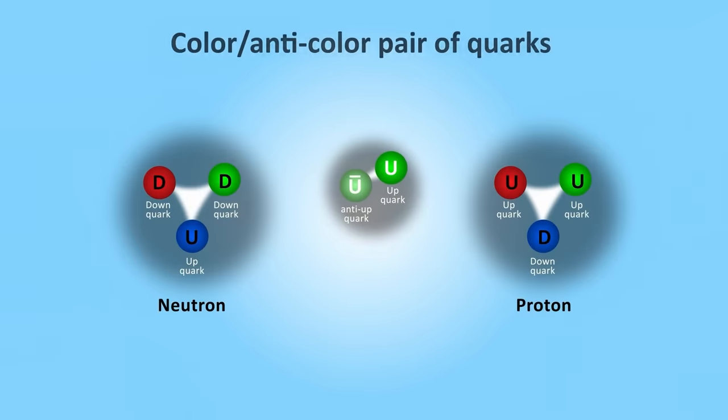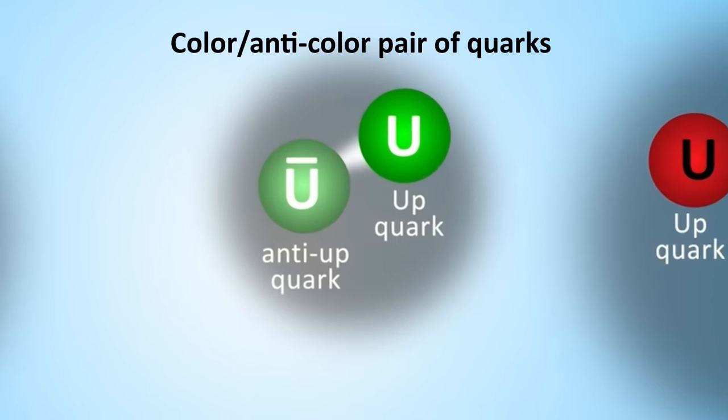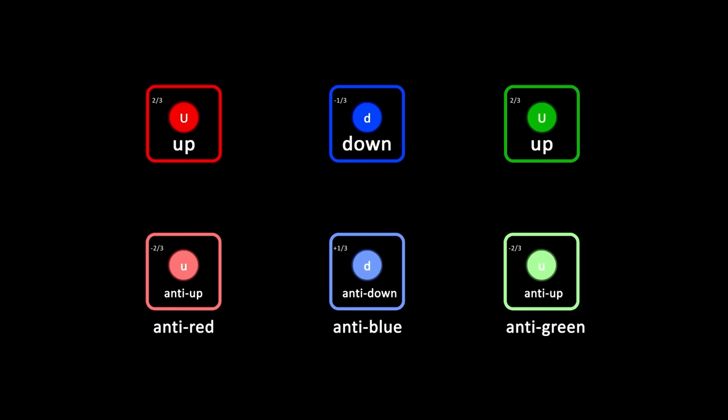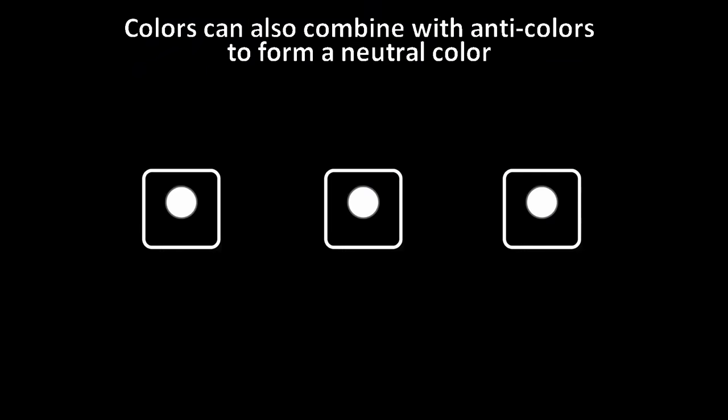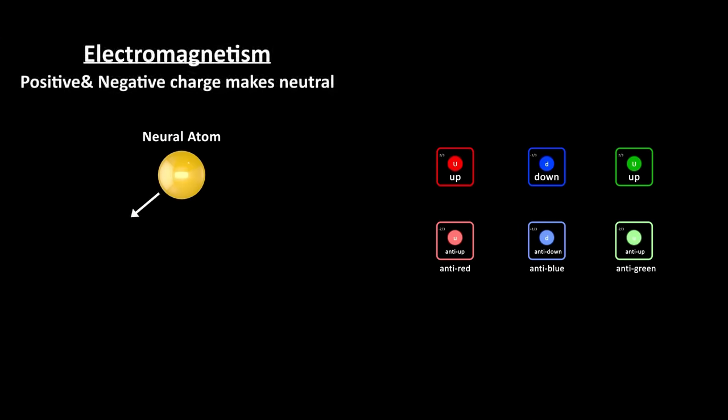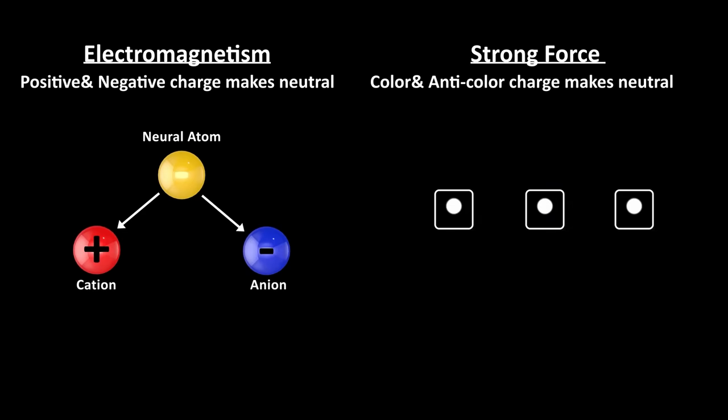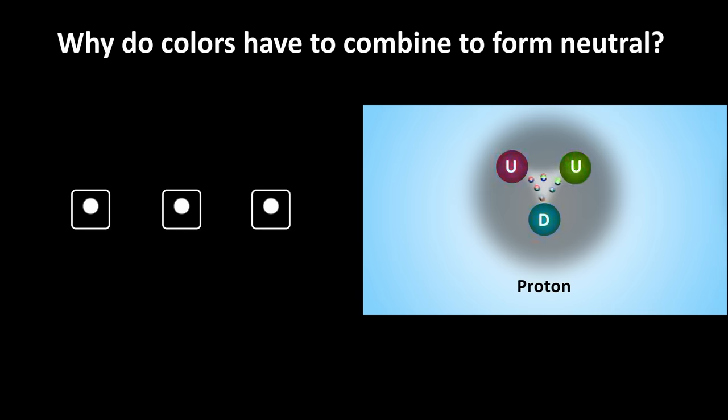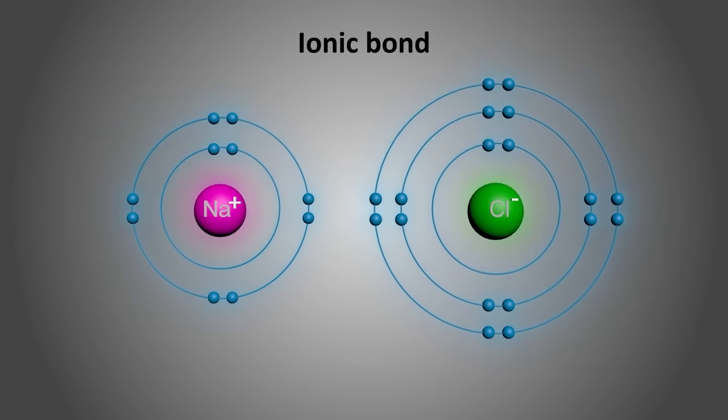This need for the combination of charges to exist as neutral attracts red, blue, and green color charged particles to each other. Color charged particles can also exist as color anti-color pairs. So for example, a blue charged quark can exist with an anti-blue charged quark to also form a neutral color. This is similar to the way that in electromagnetism, a positively charged particle is always attracted to a negatively charged particle.